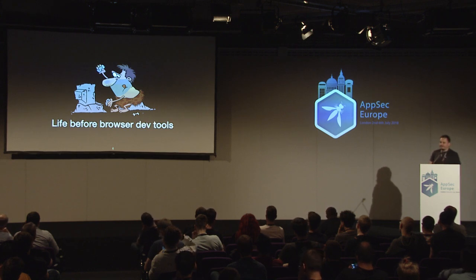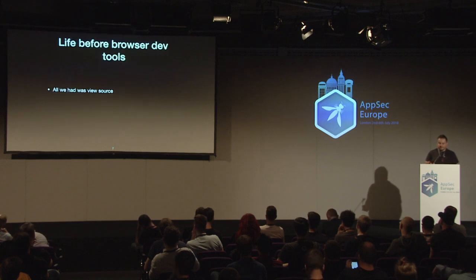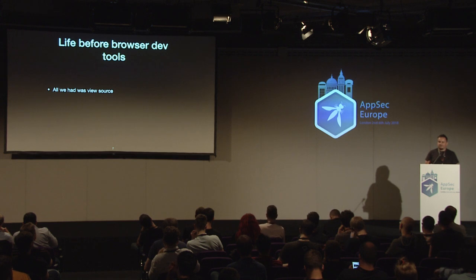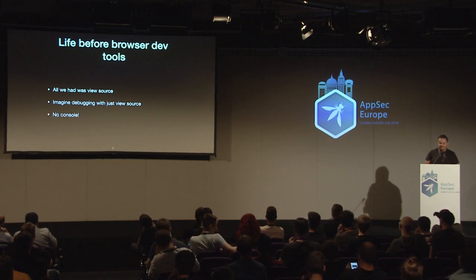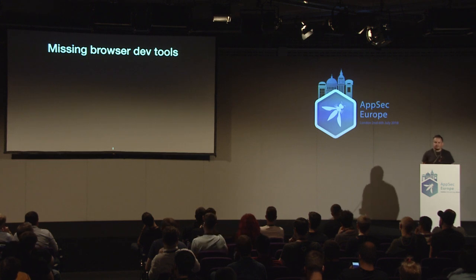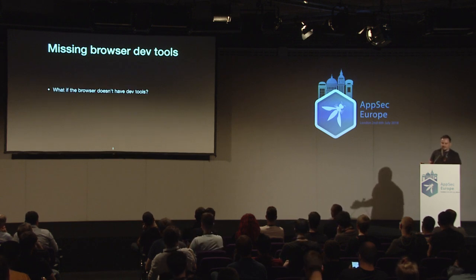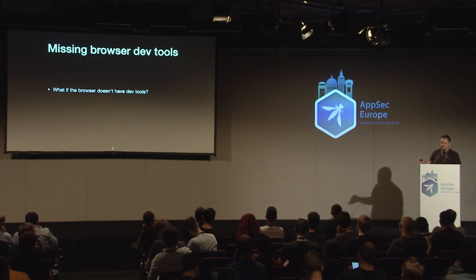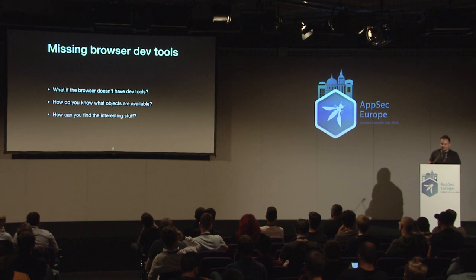Life before DevTools was like banging rocks against a computer. Back in the day when I was coding JavaScript and HTML in the late 90s, you just had view source. Can you imagine debugging nowadays with just view source? It would be an absolute nightmare — no console, reduced to doing alert and then the variable. You're in the same situation when investigating a rendering engine you don't know, trying to determine what security protections are in place. When the browser has no DevTools, how do you know what objects are available? How can you find the interesting stuff?